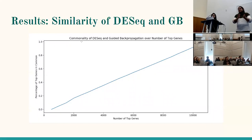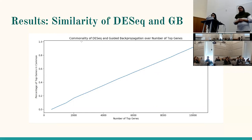It was suggested that since the pathway analysis showed some correlation, testing across multiple cancer types would be informative. If guided back propagation fails to find relevant pathways across all cancer types but succeeds for lung, that says something specific about lung cancer. Conversely, if it fails broadly, that reveals something about the method itself. Testing a variety of cancers is therefore a useful validation strategy.